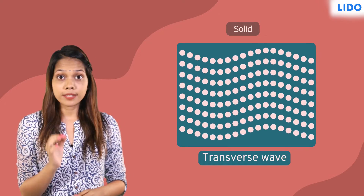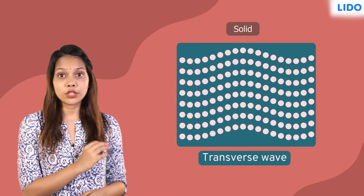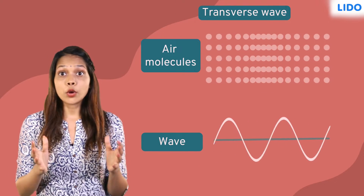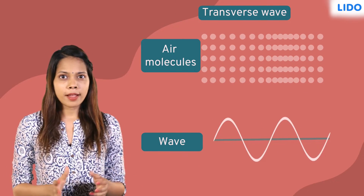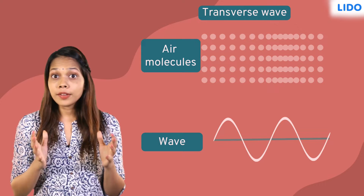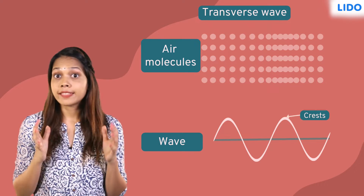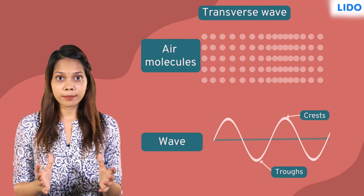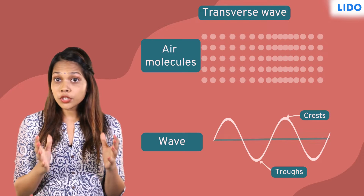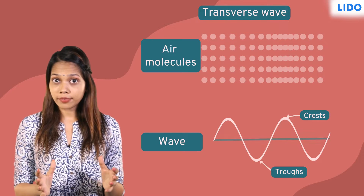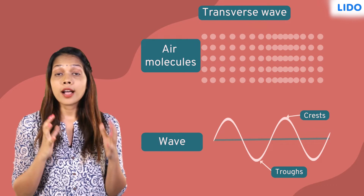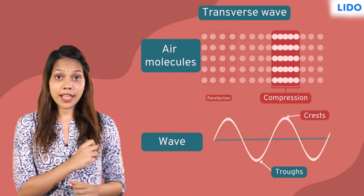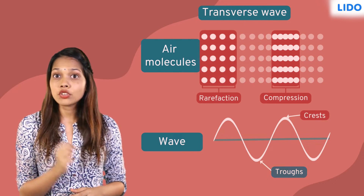The word transverse means perpendicular. A transverse wave goes through crests and troughs. The peaks we see are called crests and the depressions are called troughs. If we map a longitudinal wave with a transverse wave, a compression is like a crest and the rarefaction is like a trough.